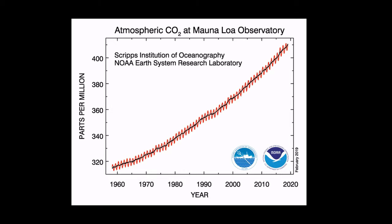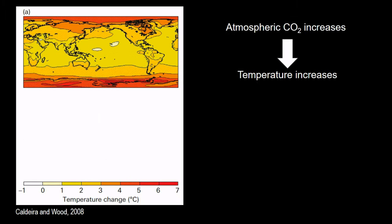And the increasing CO2 is causing, first and foremost, an increase in temperature. This is an output from a model showing, with business as usual, in 100 years we'll get about 7 degrees warming at the coast and around 2 to 3 near the equator.